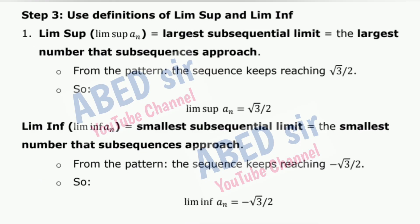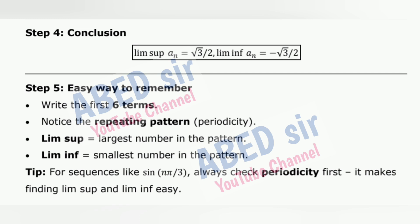Step 3: Use definitions of lim sup and lim inf. Lim sup = largest subsequential limit = the largest number that subsequences approach. From the pattern, the sequence keeps reaching √3/2, so lim sup aₙ = √3/2. Lim inf = smallest subsequential limit = the smallest number that subsequences approach. From the pattern, the sequence keeps reaching −√3/2, so lim inf aₙ = −√3/2. Step 4: Conclusion. Easy way to remember: Write the first 6 terms, notice the repeating pattern (periodicity). Lim sup = largest number in the pattern; lim inf = smallest number. Tip: For sequences like sin(nπ/3), always check periodicity first.